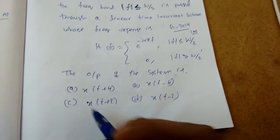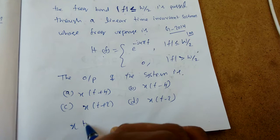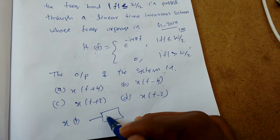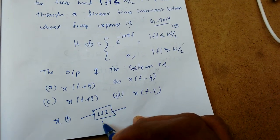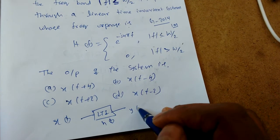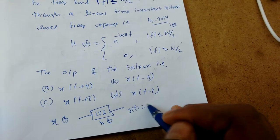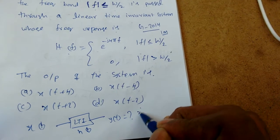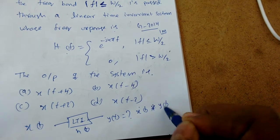The output of the system is what we need to find. So x(t) is the input, there is an LTI system with impulse response h(t), and we need to find y(t). We know the formula: y(t) = x(t) convolved with h(t).